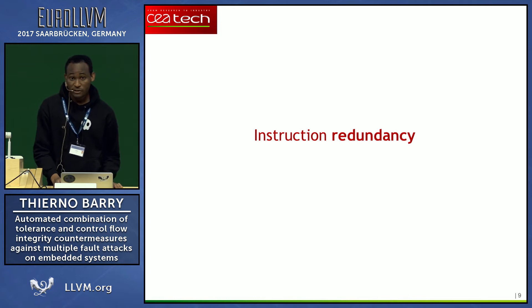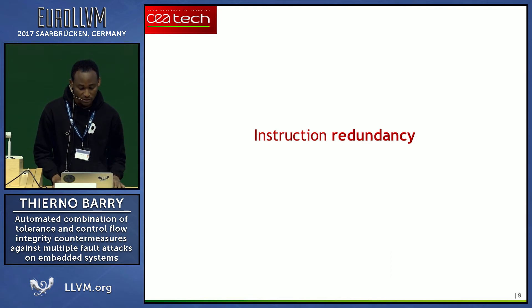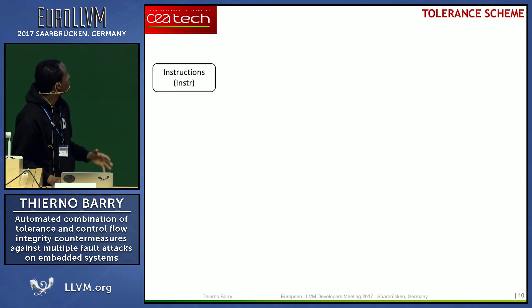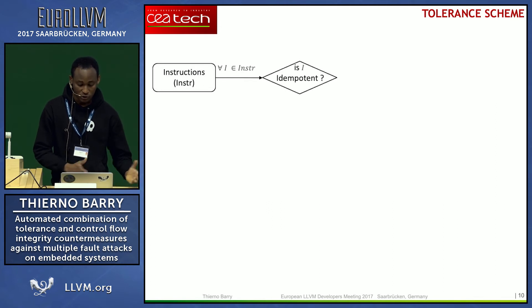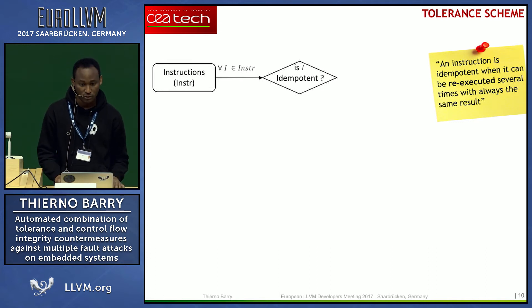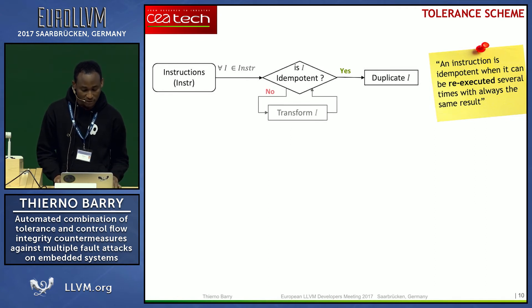Instruction redundancy consists of duplicating instructions so that if one is faulted, the second executes correctly. The tolerance scheme implemented inside the compiler works as follows: for each instruction, we check whether it is idempotent — meaning it can be executed multiple times always producing the same result. If so, we duplicate it two or three times. If not, we try to transform it into idempotent form and then duplicate it.